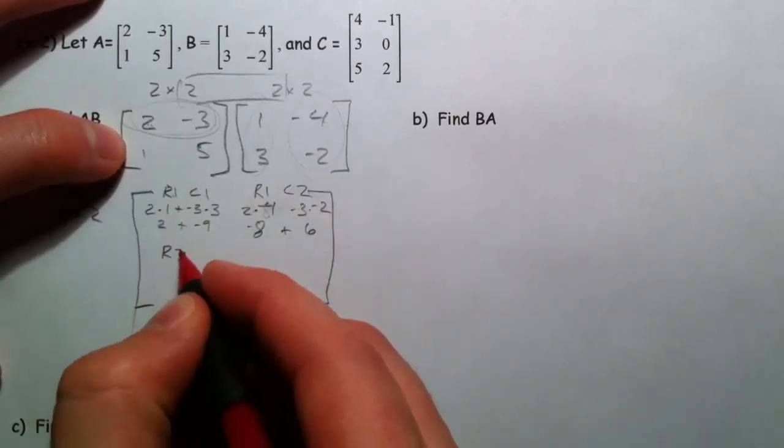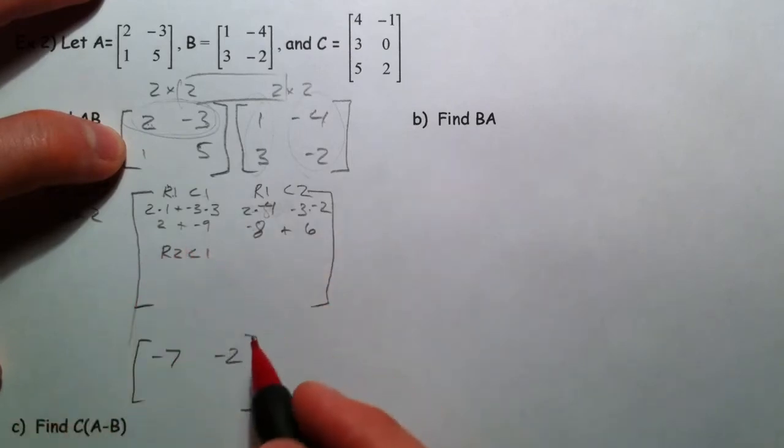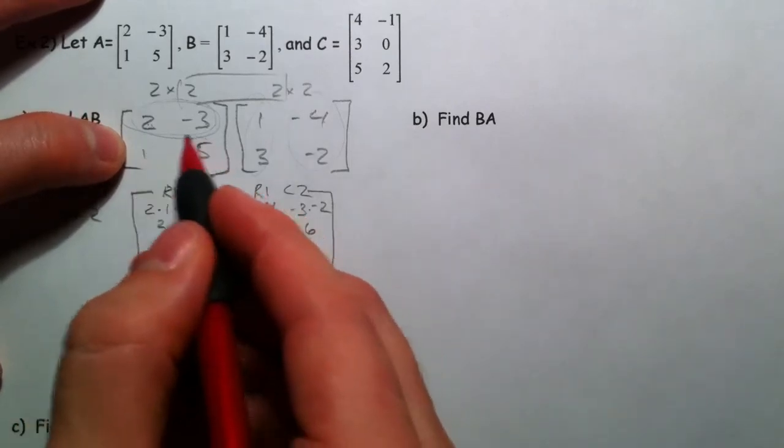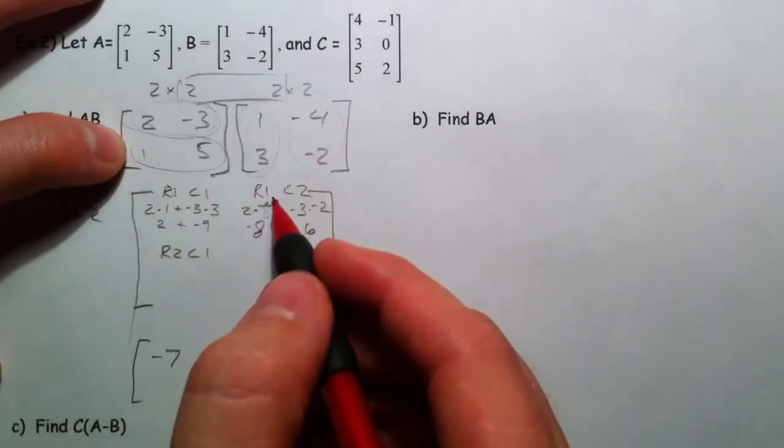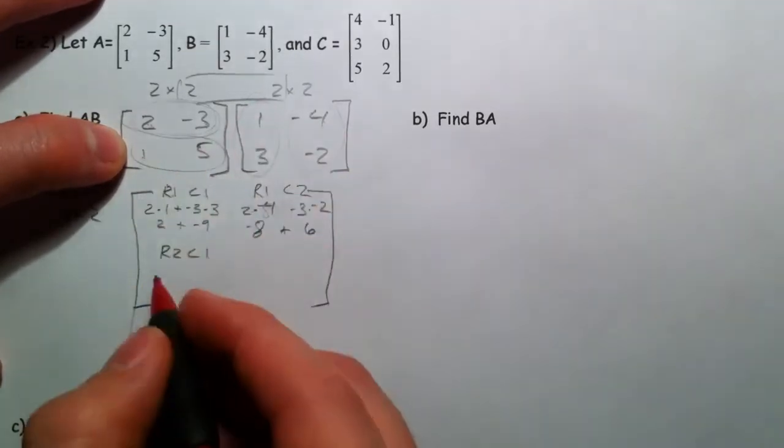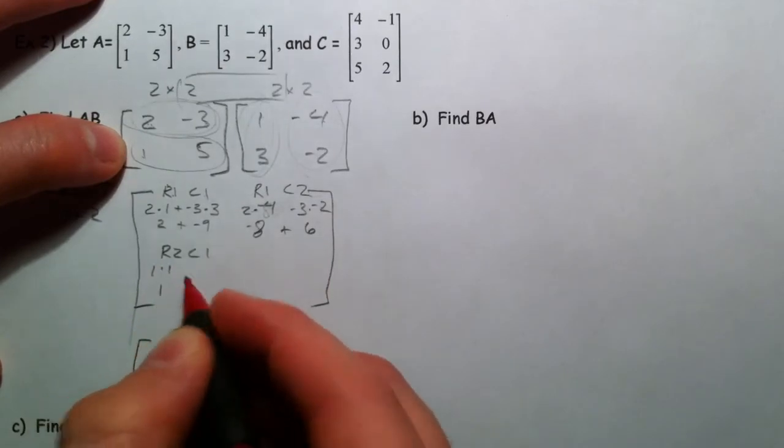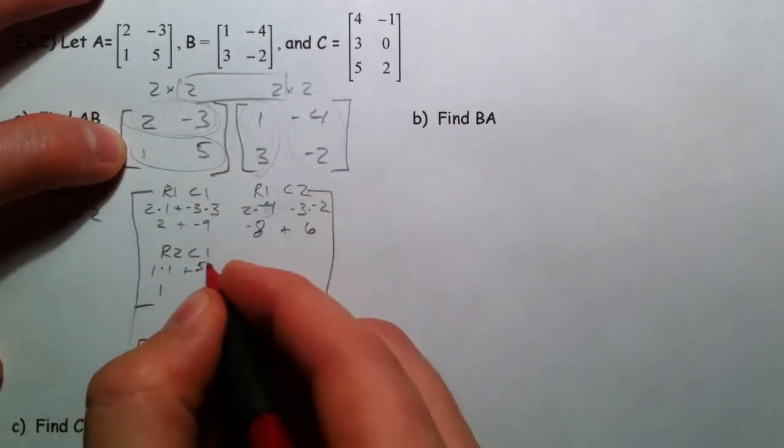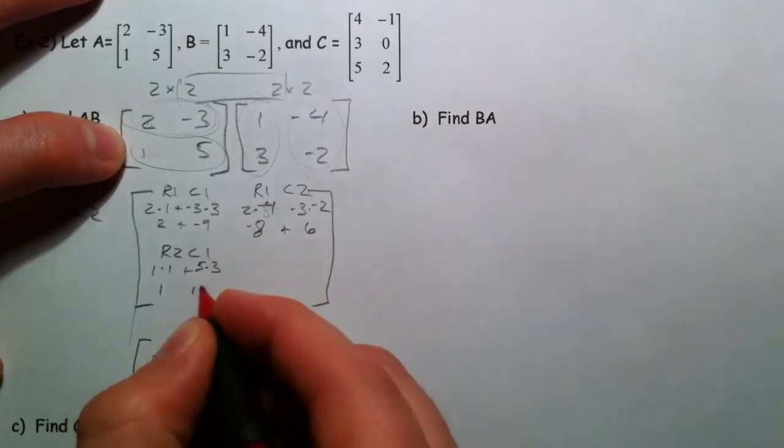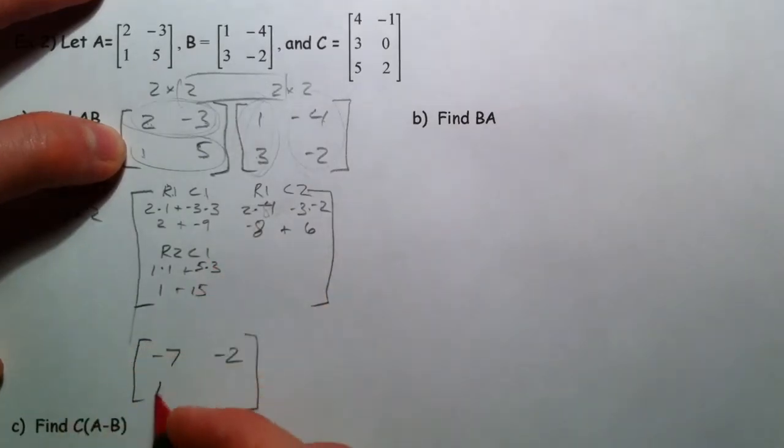We have row 2, column 1. That's this bottom left space. And so I'm going to multiply my second row times my first column. So 1 times 1 is 1, add to it 5 times 3, which is 15. So we get 16.